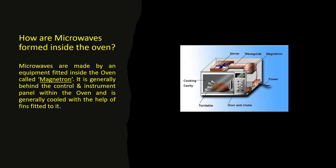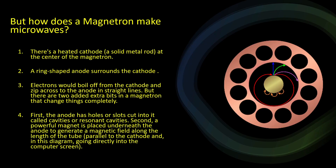How are microwaves formed inside the oven? Microwaves are made by an equipment fitted inside the oven called a magnetron. After microwaves are made, they pass through a channel called a waveguide, and then with the help of a stirrer they are inserted into the food compartment. The magnetron is behind the control panel and is generally cooled with the help of fins fitted to it, because when the magnetron forms microwaves it gets heated and those fins help dissipate the heat.